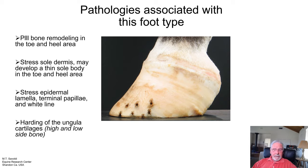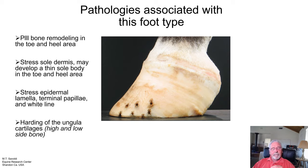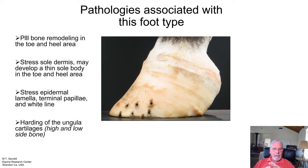I like to break side bone down into two areas. What I'm referring to as high side bone is usually tension caused by the ligaments that come off the top of the ungual cartilage, which is attached to bones. So when the bone column goes forward, the foot's on the ground going backward.